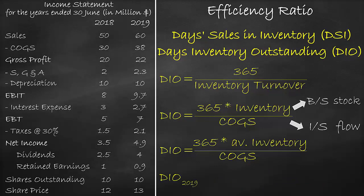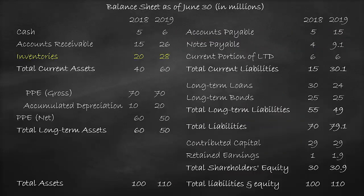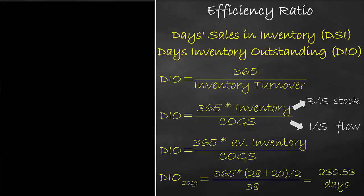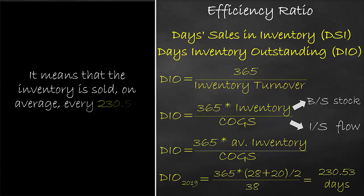Next, let's calculate the days inventory outstanding for the year 2019. 365 times — let's look at the balance sheet for the average inventory in the years 2019 and 2018. We have inventory of $28 million in 2019 and inventory of $20 million in 2018. So in our formula, we will multiply the average inventory of $28 million plus $20 million divided by 2, divided by the cost of goods sold in 2019 of $38 million, which is equal to 230.53 days. It means that inventory is sold, on average, every 230.53 days. The shorter the days inventory outstanding, the better.